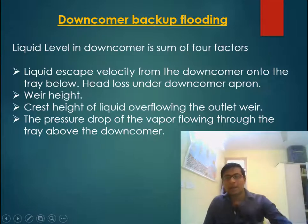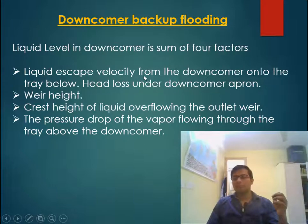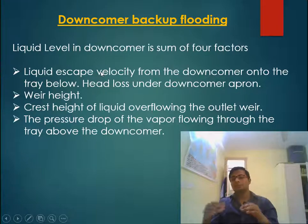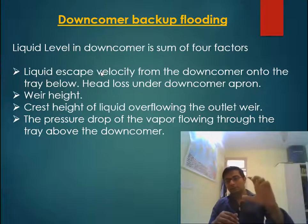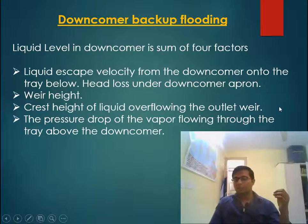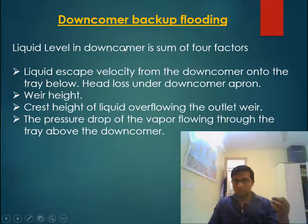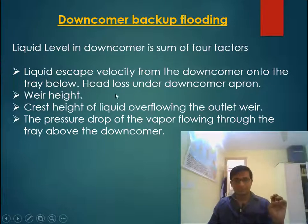The liquid level inside the downcomer is the sum of four factors: (1) the liquid exit velocity — higher velocity means higher exit loss, also called head loss under the downcomer apron; (2) weir height — higher weir height increases the liquid level on the tray and thus inside the downcomer; (3) crest height — higher crest height increases downcomer level and depends on liquid flow rate; (4) tray pressure drop — higher pressure drop means higher downcomer liquid level.